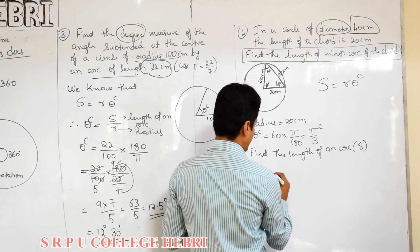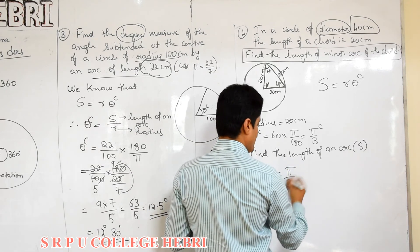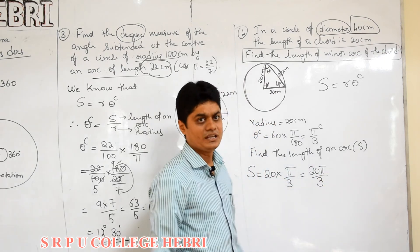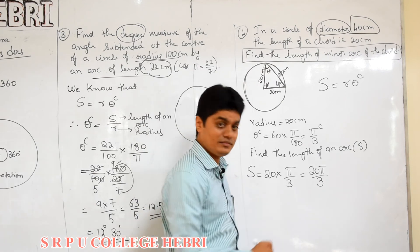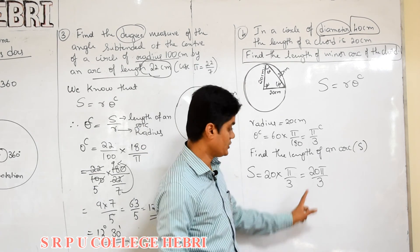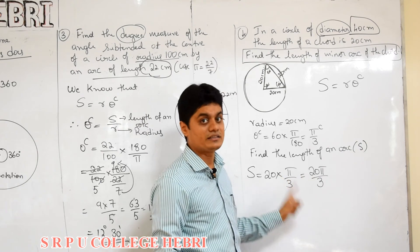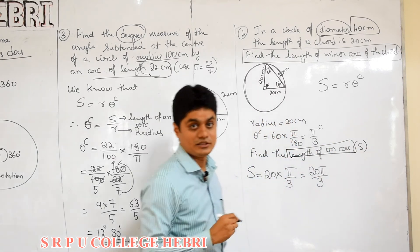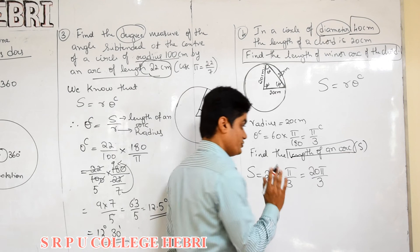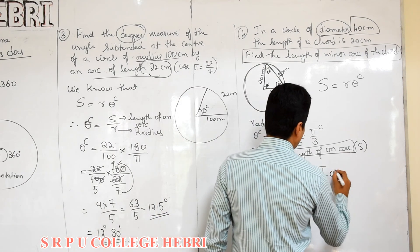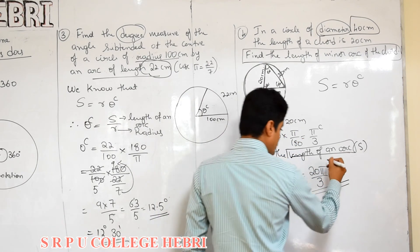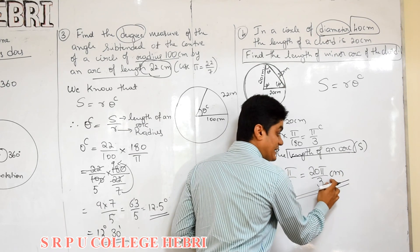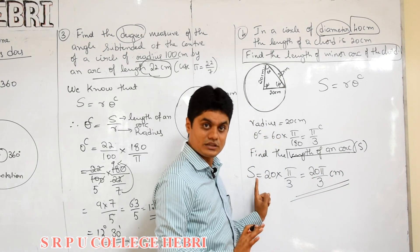Substitute directly: R is 20 and theta radian is pi by 3. So S equals 20 pi by 3. No need to simplify further. What is the unit? Is it radian? No. Why can it not be radian? Because we are measuring the length of an arc, and length cannot have radian as unit. The unit will be centimeter, not radian. You may make this mistake because it looks like an angle, but 20 pi by 3 is in centimeter.